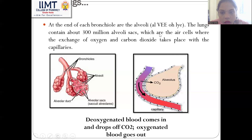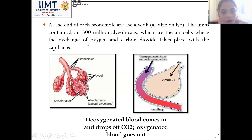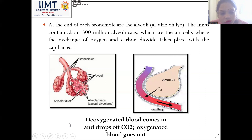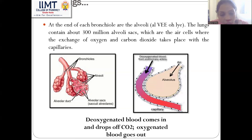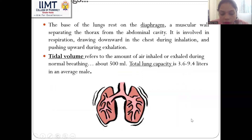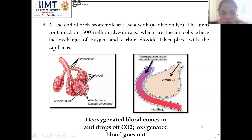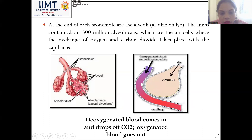At the end of each bronchus are the alveoli. The lungs contain about 300 million alveolar sacs, where air cells enter and where the exchange of oxygen and carbon dioxide takes place within the capillaries. As you can see, the deoxygenated blood comes in and oxygenated blood goes out — exchange of gases is taking place.